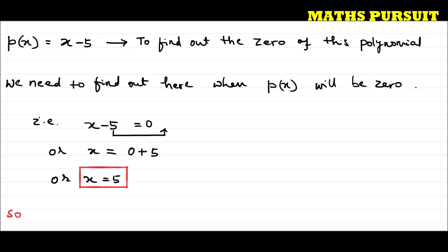So the zero of the given polynomial is 5.